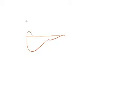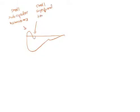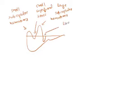Here we have the liver. Talking about the pathology, this is a small subcapsular hematoma, and this one here is a small superficial tear. With increasing seriousness, this is a large subcapsular hematoma and large superficial tears.